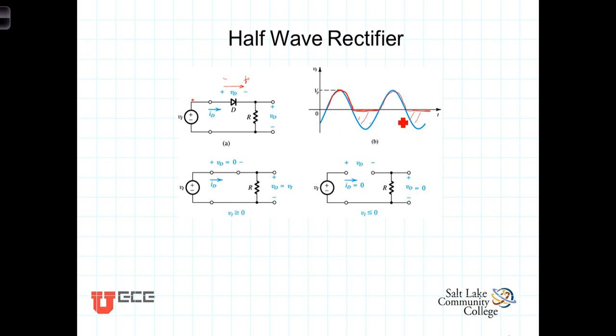Schematically then, when we're in the positive part of the cycle, the switch is closed, the voltage drop is zero. During the negative part of the cycle, the switch is open and current is zero, so the output voltage is zero.